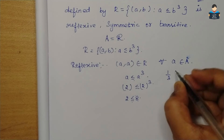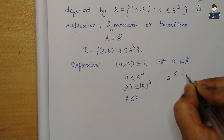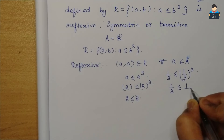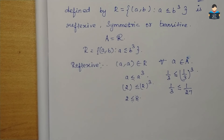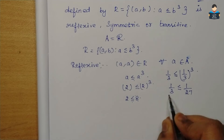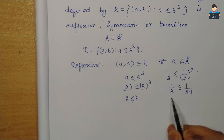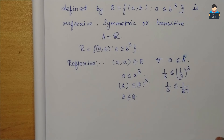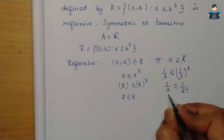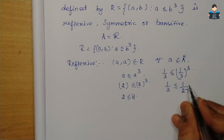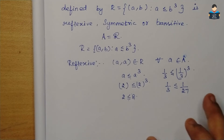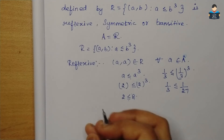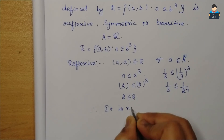1/3 is less than or equal to 1/27? That is not true — 1/3 is not less than 1/27. So the condition is not satisfied. Therefore, it is not reflexive.